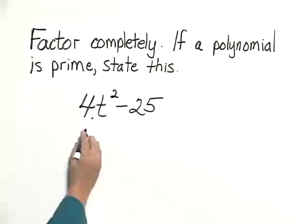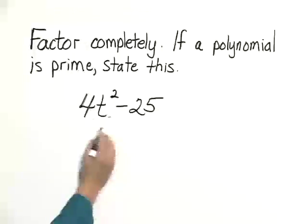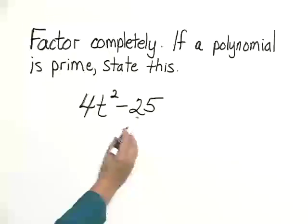We first of all check to see if there are any common factors, and there are not. And then we note that there are two terms. When there are two terms, we look to see if we have a difference of squares.